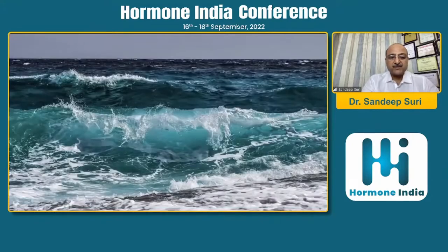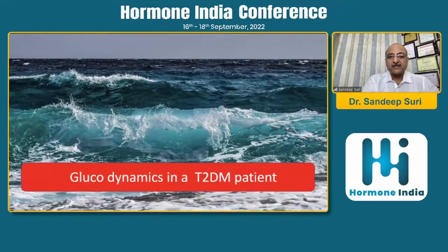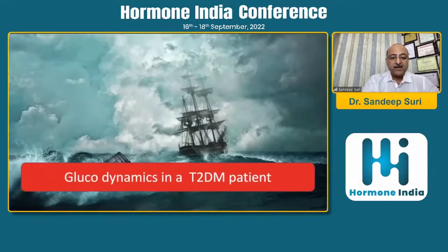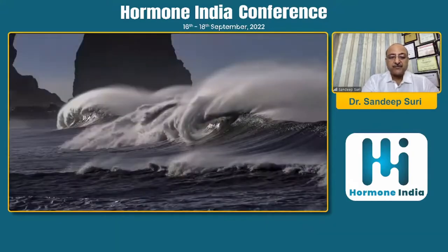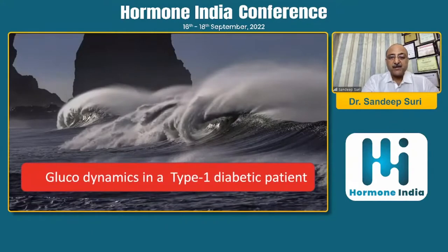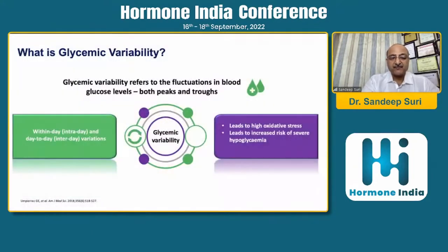But what happens in type 2 diabetes? In people with type 2 diabetes, there can be marked wave-like fluctuations, and when uncontrolled diabetes is present, you can have tsunami-like situations. Peaks and nadirs can be there, more marked in amplitude, duration, and frequency in type 1 diabetic patients. So we are talking about glycemic variability - that is, fluctuations.